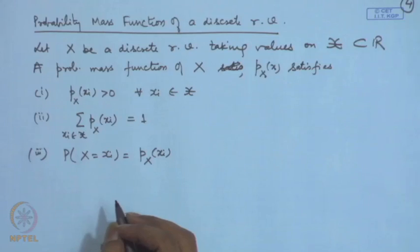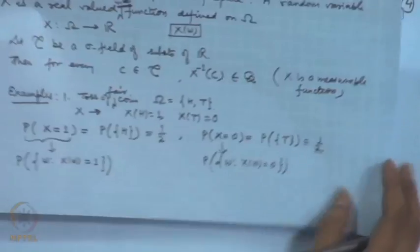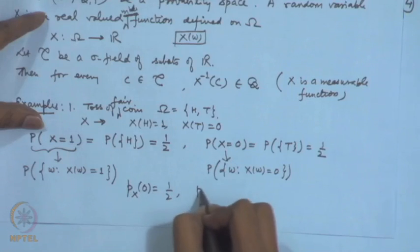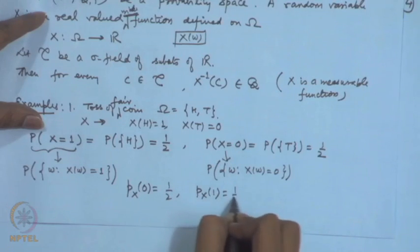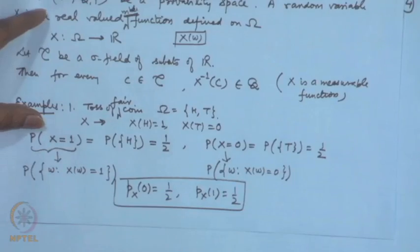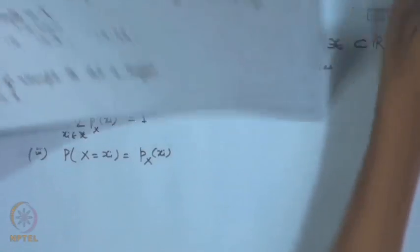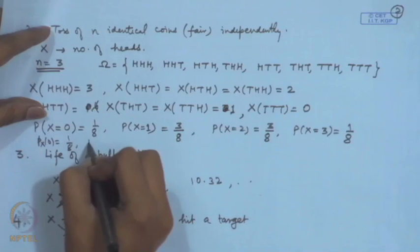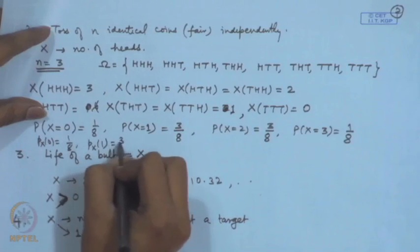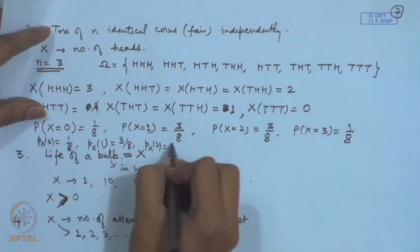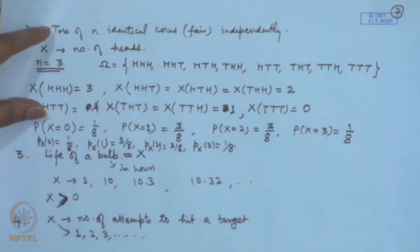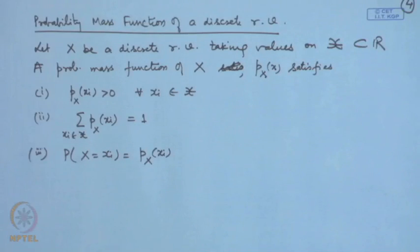In the single coin example, p_X(0) = 1/2 and p_X(1) = 1/2. In the three-coin example, p_X(0) = 1/8, p_X(1) = 3/8, p_X(2) = 3/8, p_X(3) = 1/8. Let us consider some more examples of random variables.